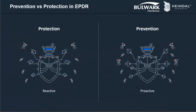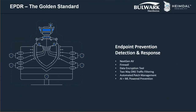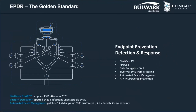The major difference between a normal EDR and EPDR is this: EDR is based on the concept of protection, focusing mainly on remediation and detection — it is reactive. EPDR focuses on the prevention side — we are very proactive. Something happens and they react; we don't allow that thing to happen. That's the difference between our approach and other vendors in the market. Looking deeper into why EPDR is called the golden standard — in 2020 we stopped 13 million attacks through our endpoint DNS security alone.